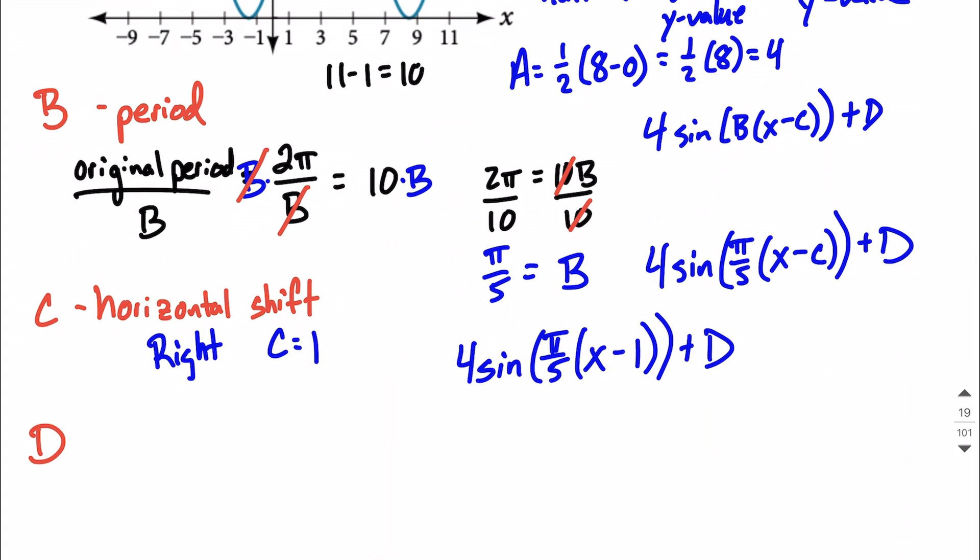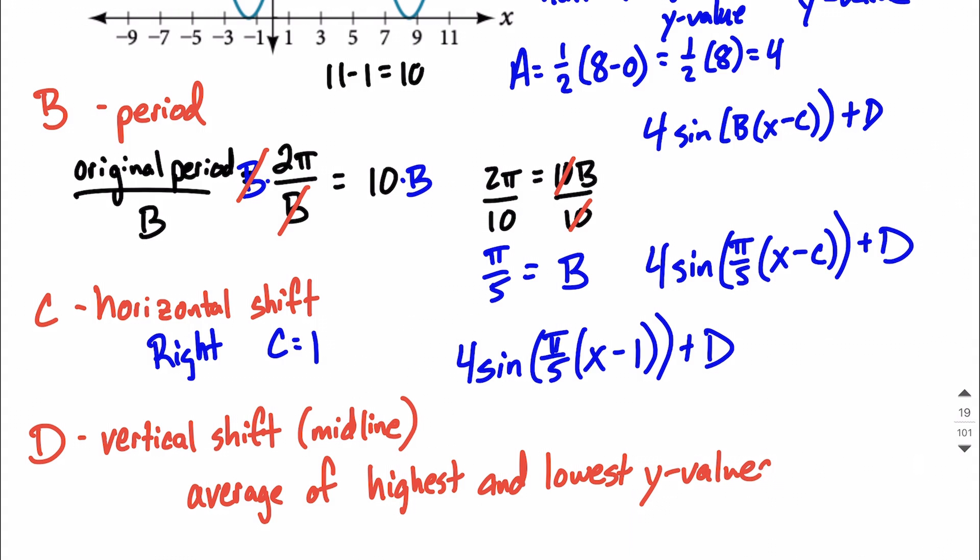Last component here is D. D has to deal with a vertical shift. Sometimes we call this the midline. So we're trying to figure out what line, a horizontal line, cuts this graph directly in half. So to do that, what we do is we take the average of the highest and the lowest values, and that's y values that we're focused on.